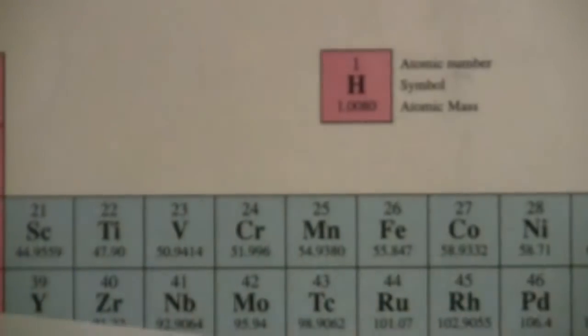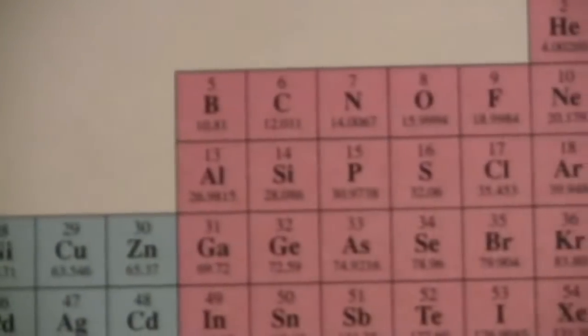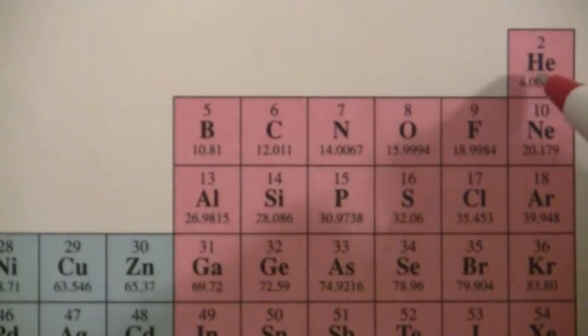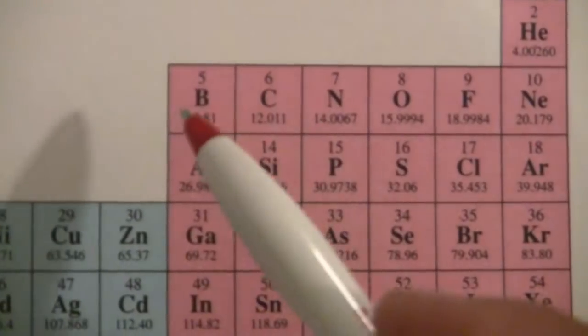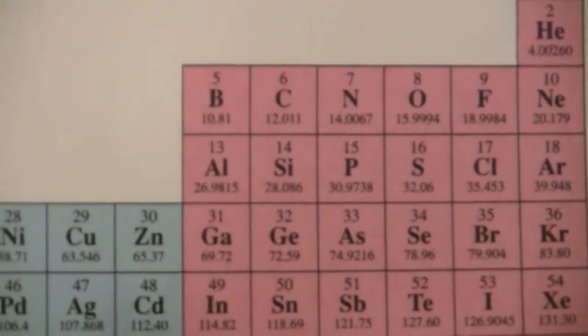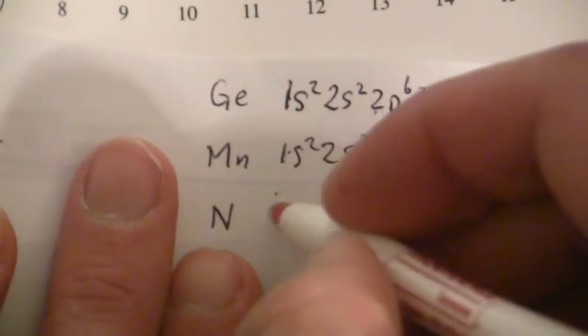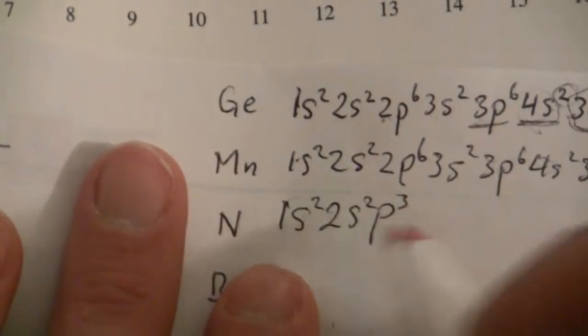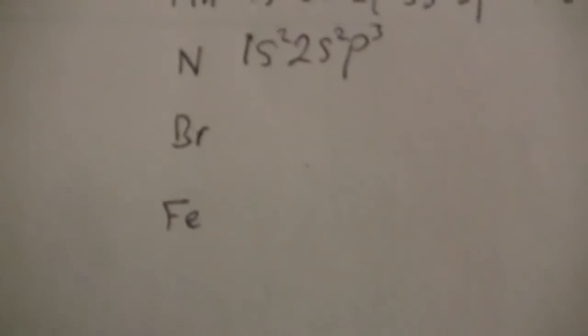Now nitrogen is a light element, so that one will be easier. 1s2, 2s2, and then 2p3. That's all that's there, that one. And I'm going to go ahead and write it in the other format. 1s2, 2s2p3. So that's kind of how it would possibly look.